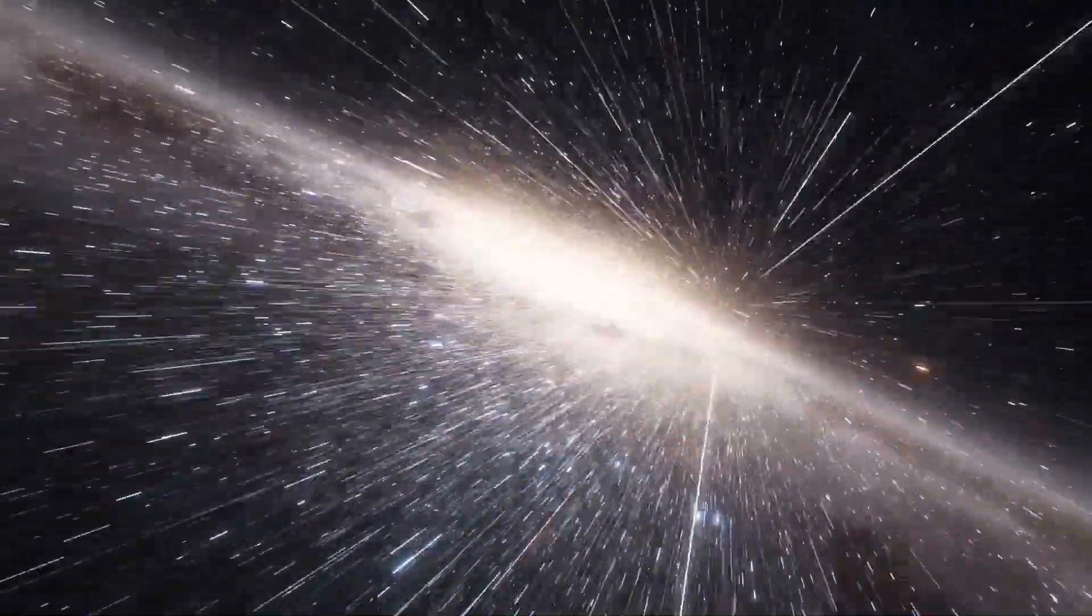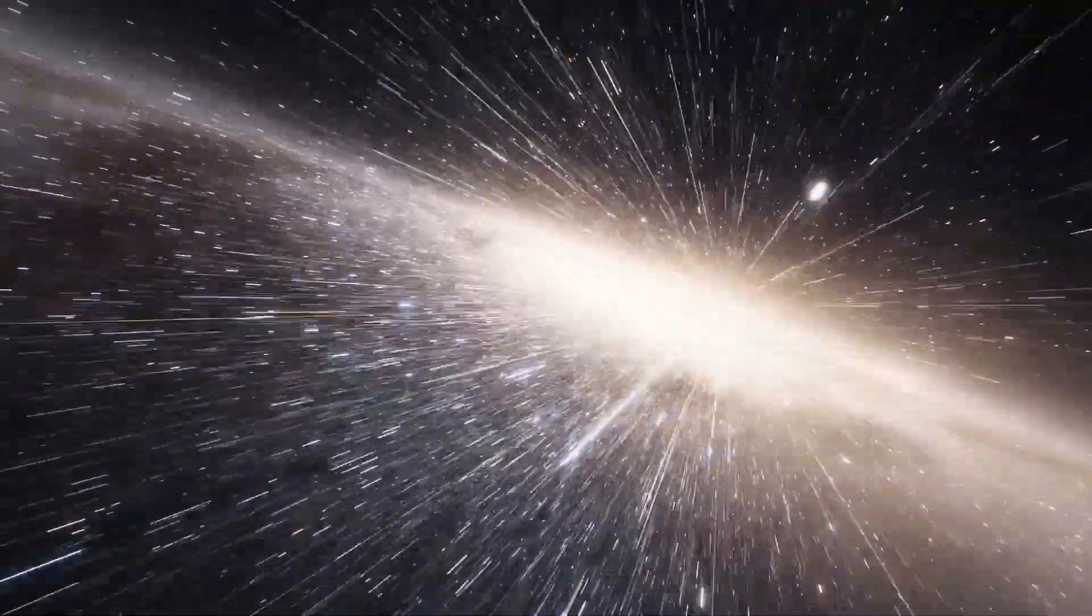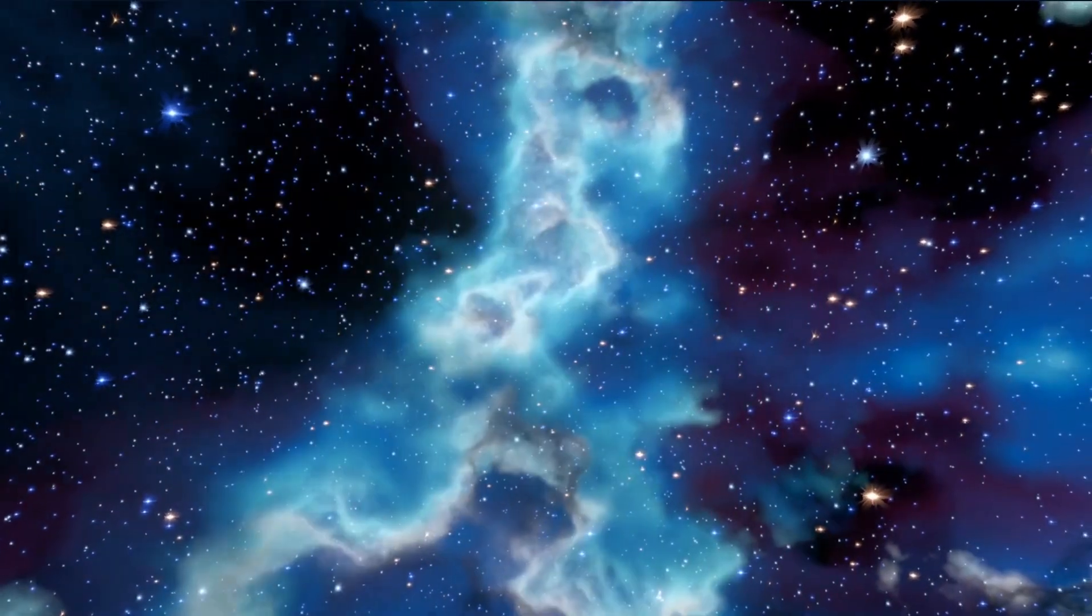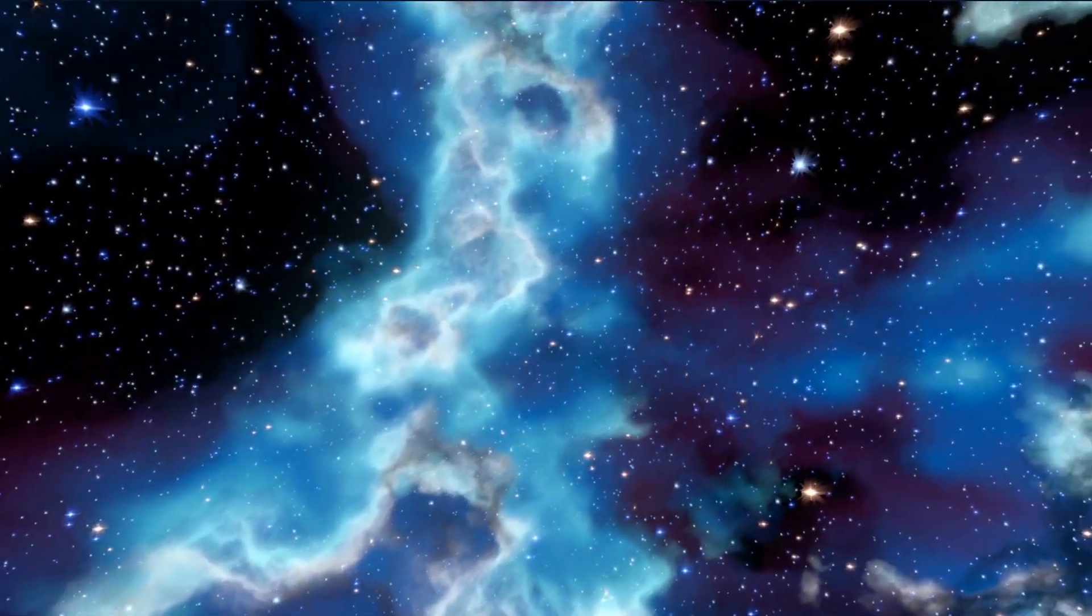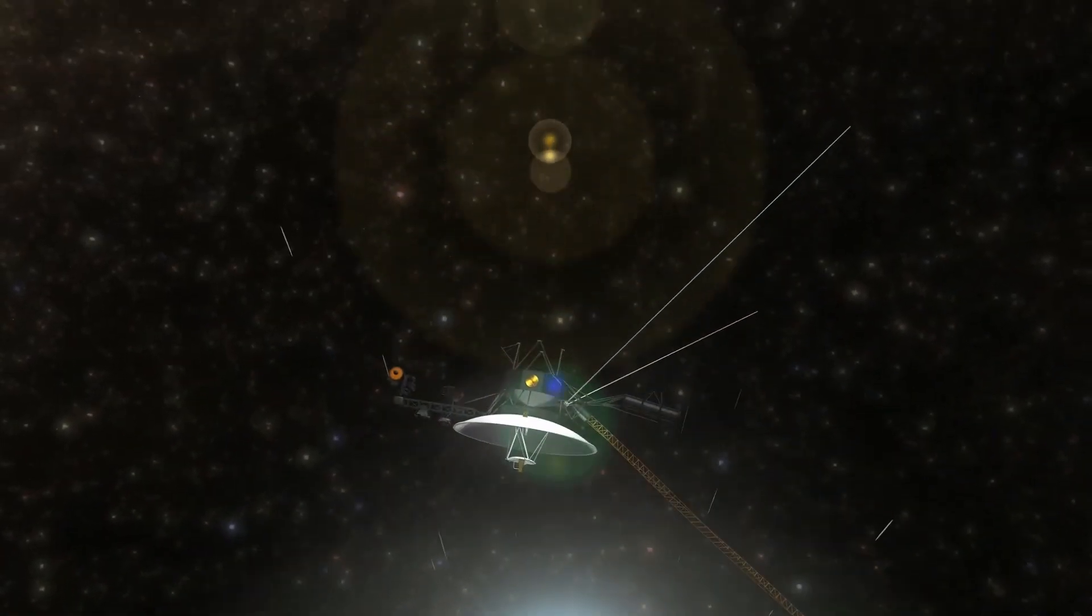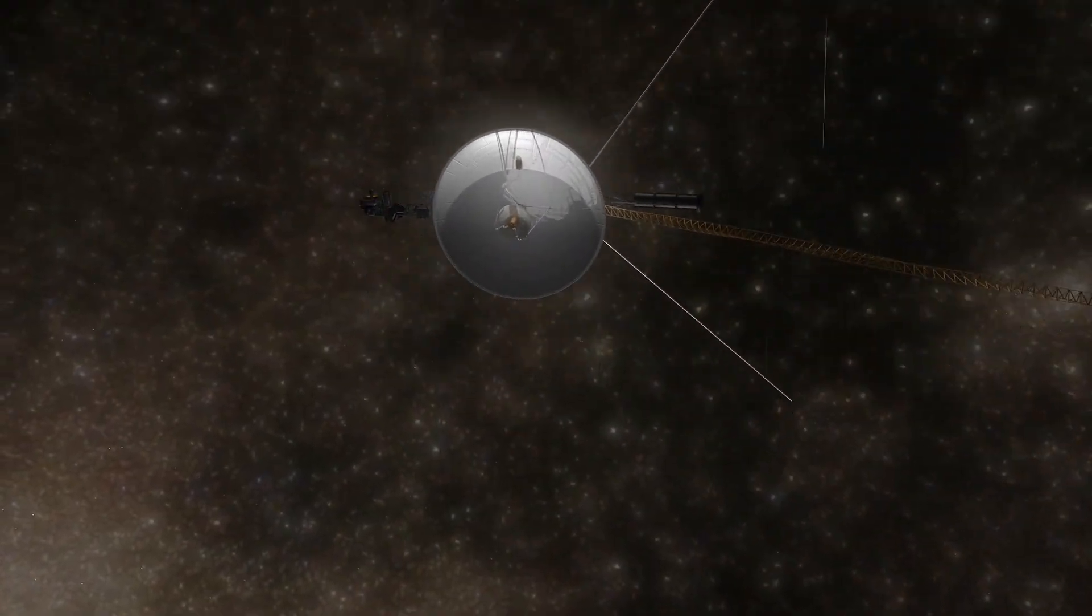It can be defined as the limit where the solar wind from the Sun is stopped by the interstellar medium. Reaching after the heliopause will allow the space probes to make measurements of the interstellar fields, particles, and waves that are unaffected by the solar wind and thus providing scientists with invaluable data.